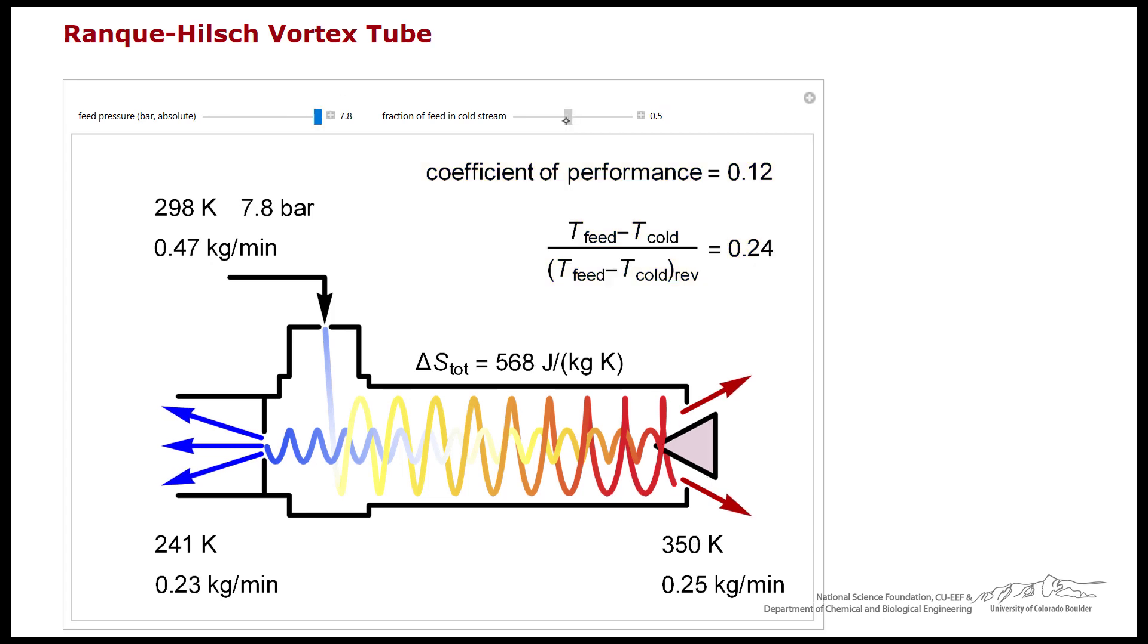And as I decrease the fraction in the cold stream, the efficiency goes up. So the efficiency goes up, but the coefficient of performance goes down because remember the efficiency times the fraction in the cold stream is the coefficient of performance.